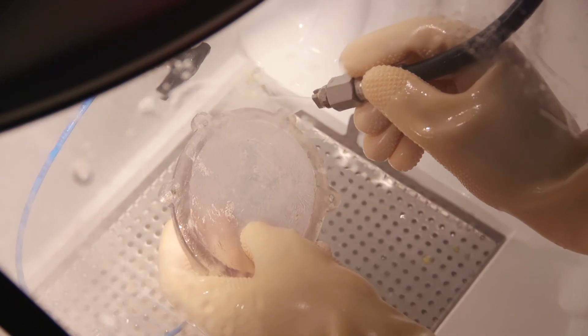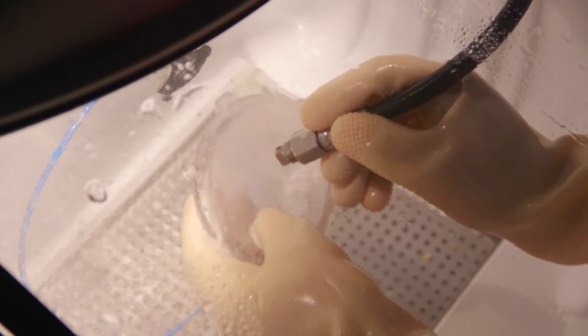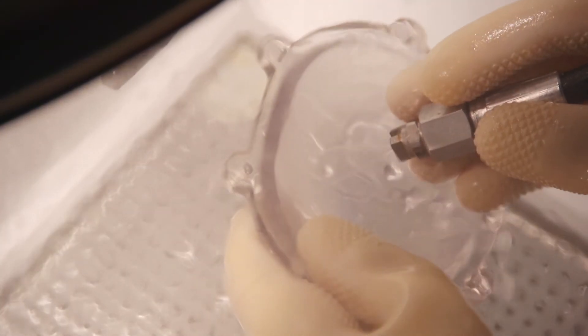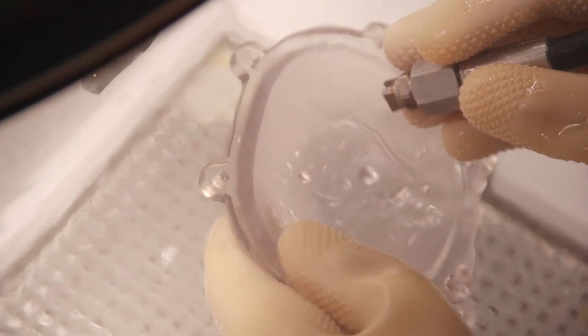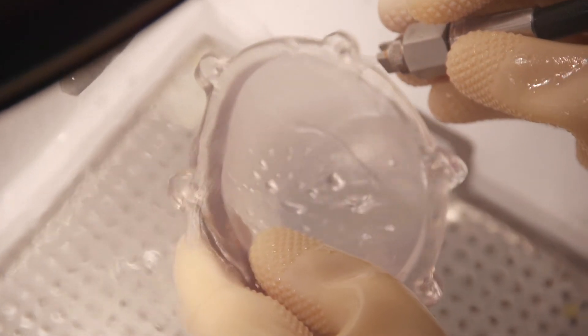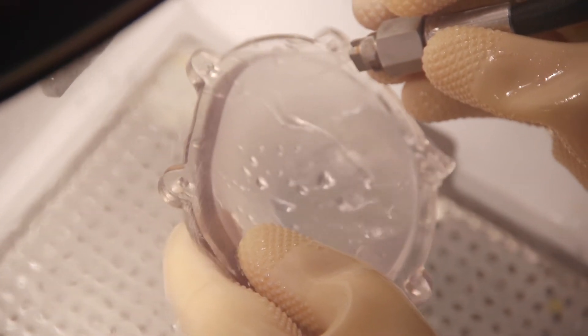Once printed, you can enhance the transparency of models using the following procedures. For most models, the most efficient way to remove support material is to use a cleaning unit that employs high-pressure water jetting. Be careful not to damage delicate models when cleaning with a water jet.